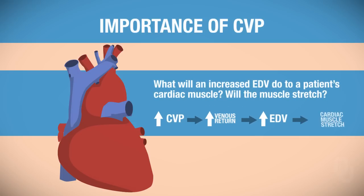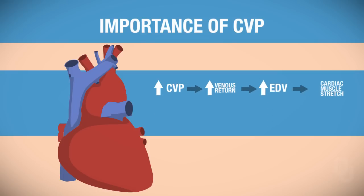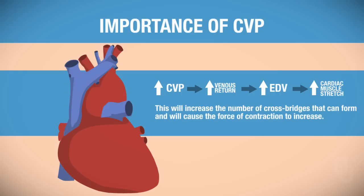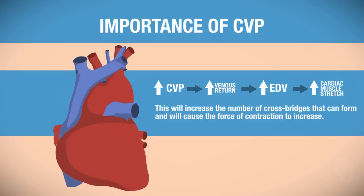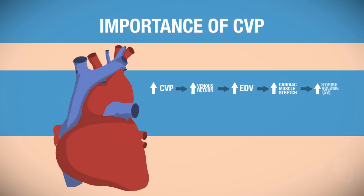So what will an increased end diastolic volume do to the patient's cardiac muscle — is it going to stretch or not? A greater volume of blood causes more stretch toward the optimal length, which will increase the number of cross-bridges that can form and will cause the force of contraction to increase. As a result, this will cause the stroke volume to increase.